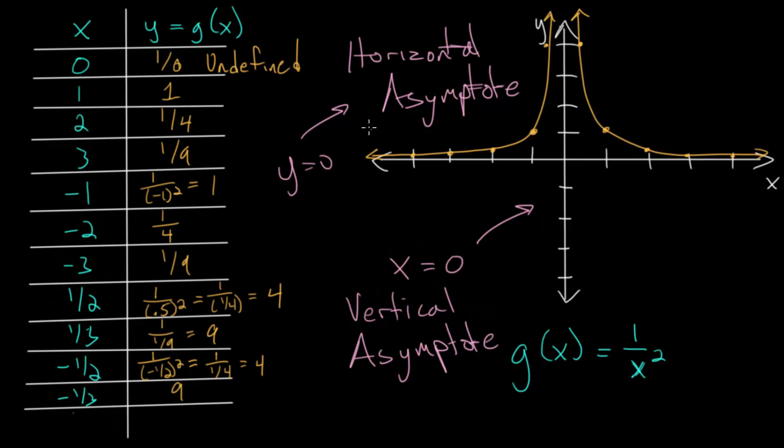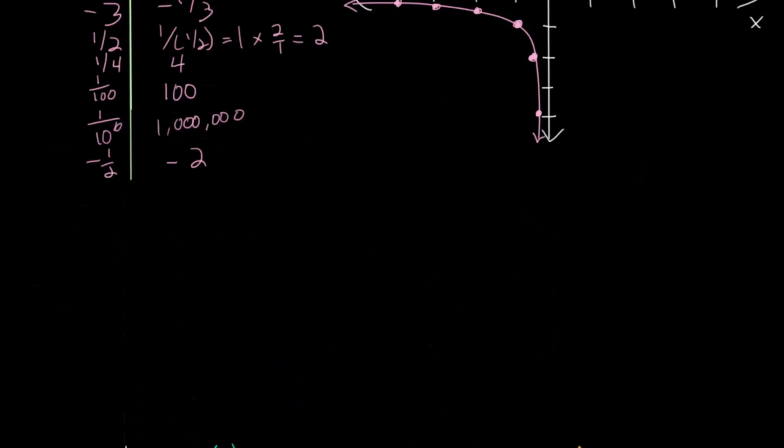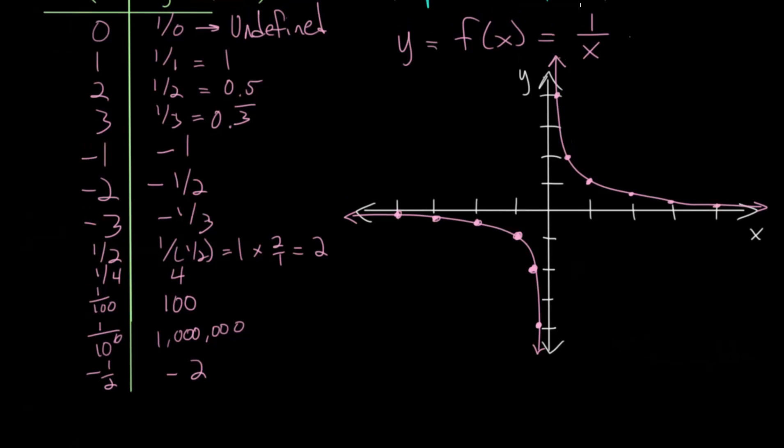So we have asymptotes in two different scenarios here. And again, for our original parent function, this 1 over x, we actually have the same two asymptotes. So when x equals 0, we have our vertical asymptote. And when y equals 0, we again have that horizontal asymptote, which often is just abbreviated as HA or VA in this case.